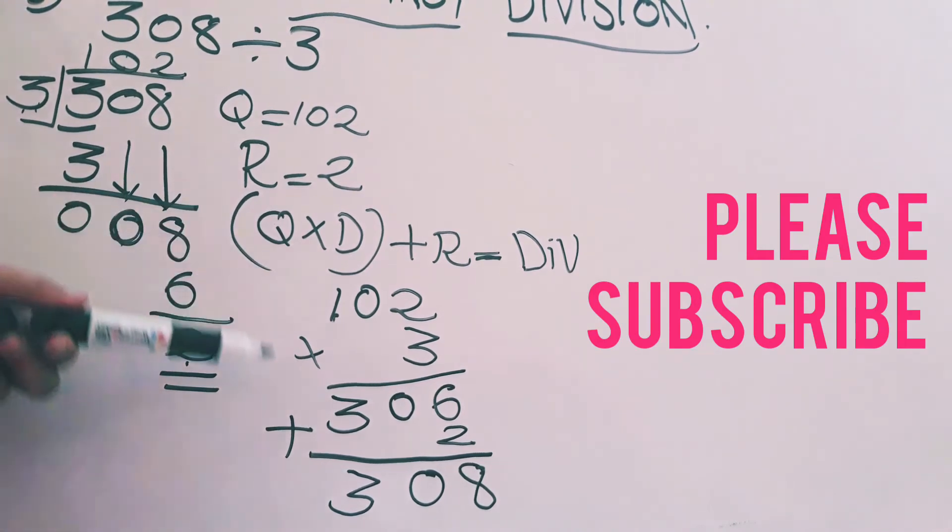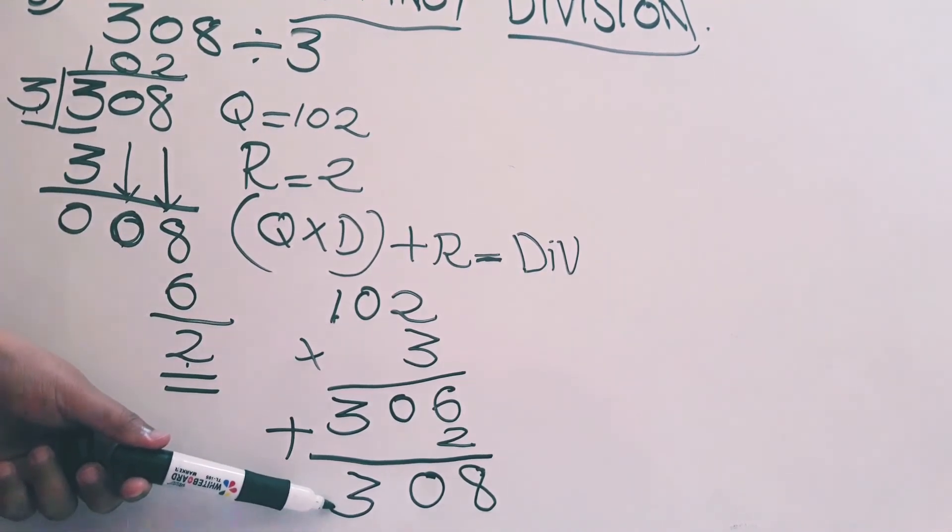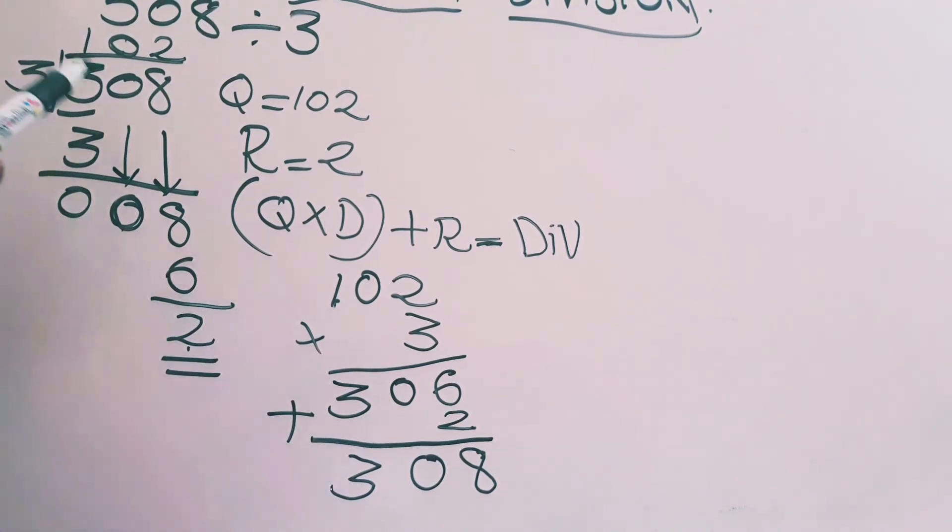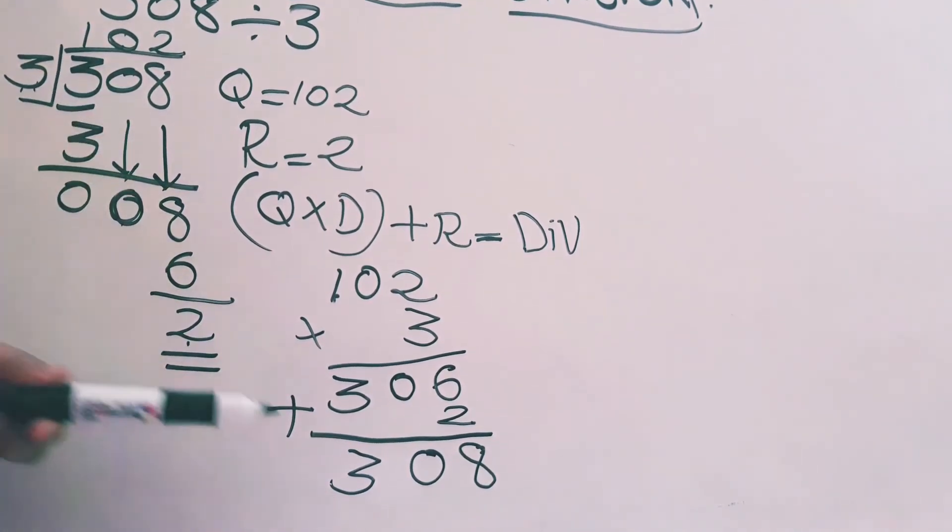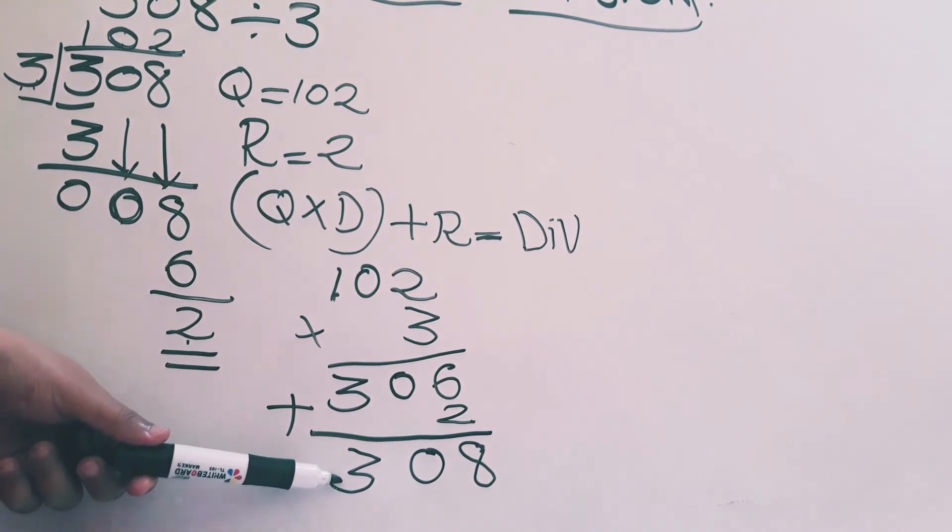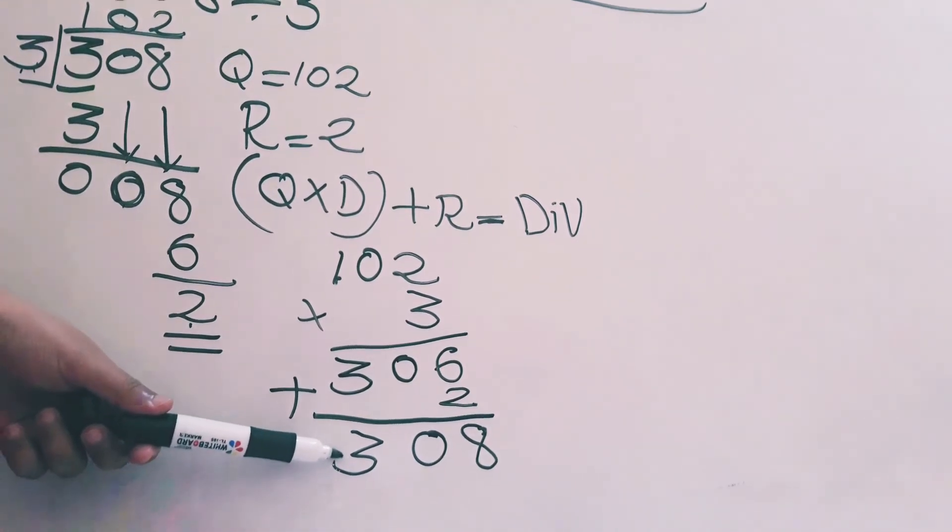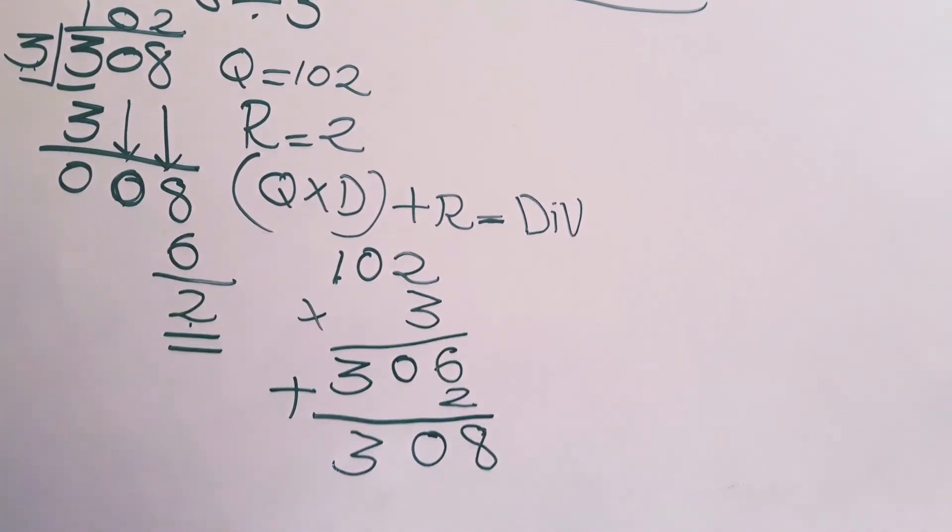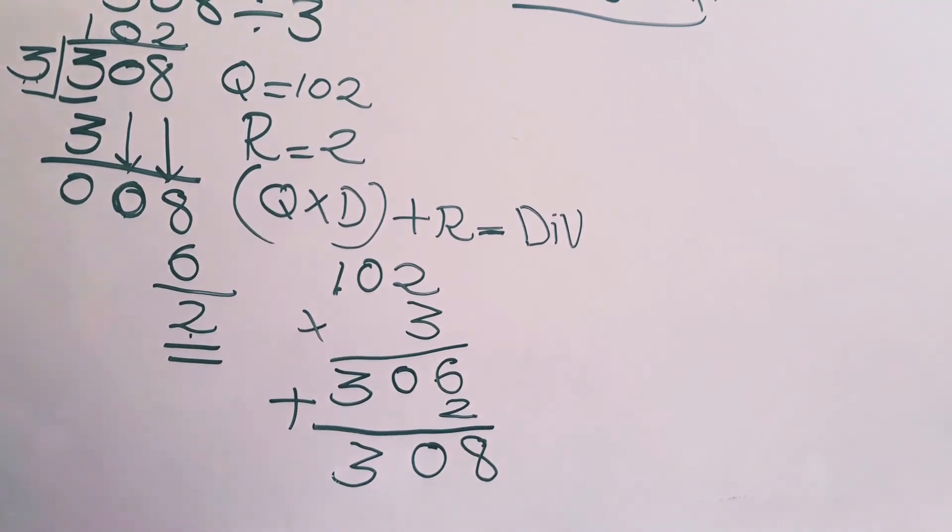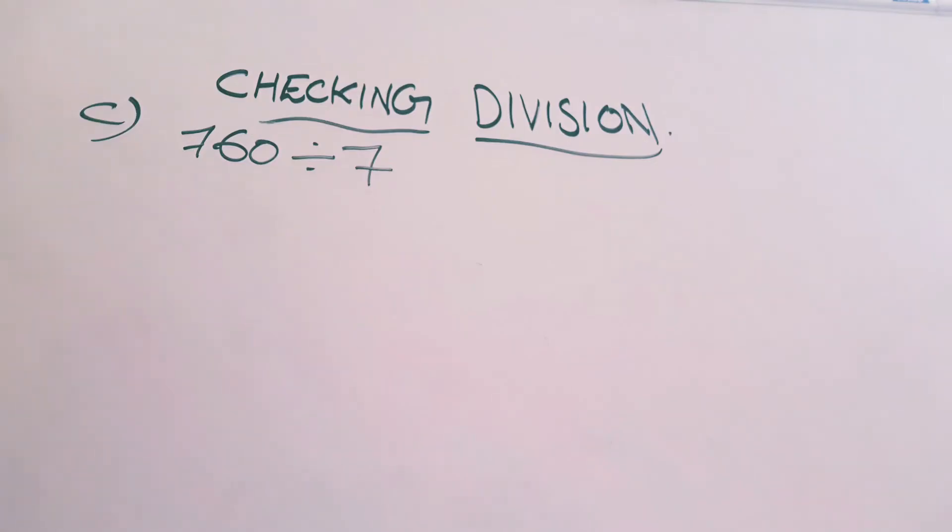Q into D plus R, that answer should be our dividend. 308. Dividend is 308. Here Q into D plus R is also 308. That means our division is correct. Let's see one more example. Question C. 760 divided by 7.